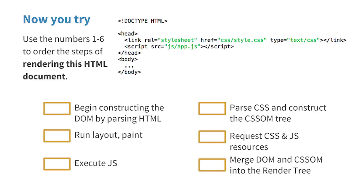Let's take a second to walk through the steps to render the simple page you see on the screen here. Using numbers one through six, number the steps in the order that the browser will have to take to render this page. Put one next to the first step, two for the second, and so on. Good luck.